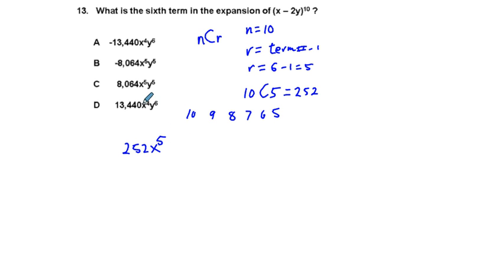So already we know that we do not have answer choice D, nor do we have answer choice A. And then we're going to have this other term, negative 2y to the fifth power.